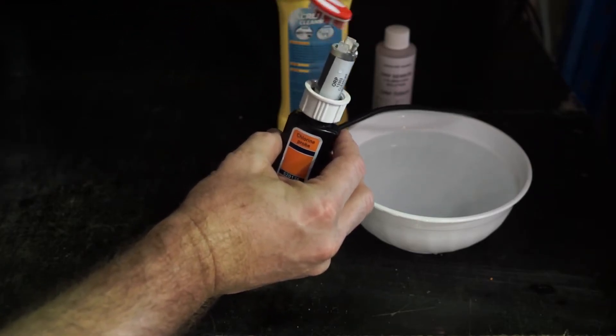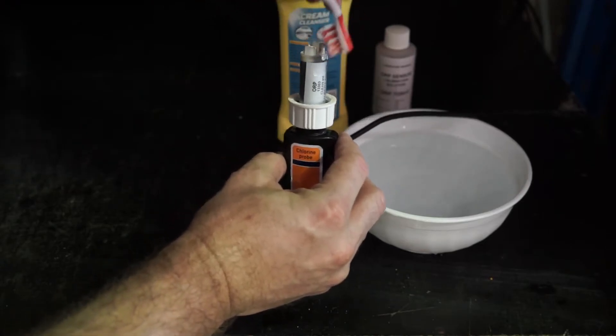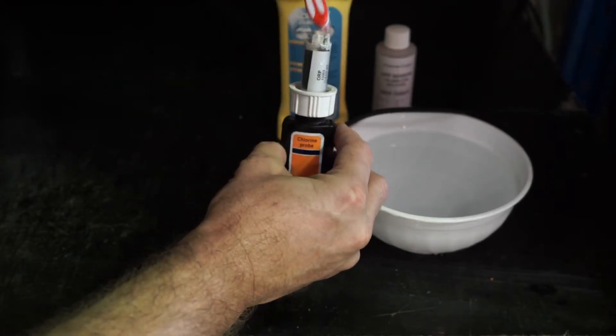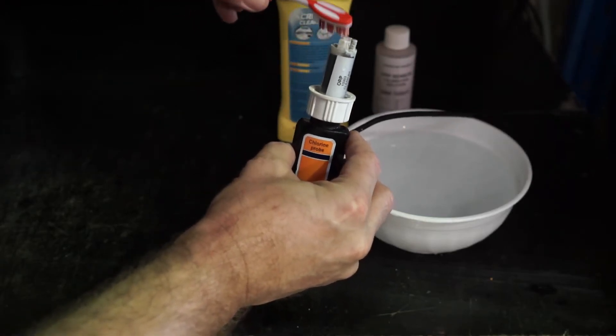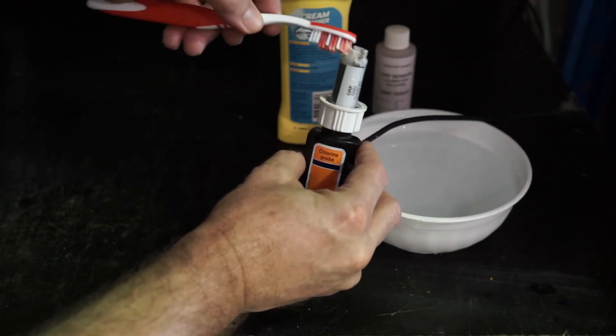Now again with a soft toothbrush or a cotton bud, and also the electrode as well, back to the Gold Tip to make sure we're totally clean.